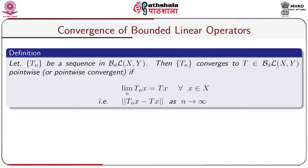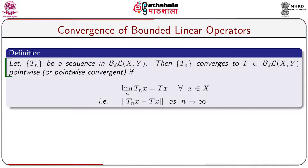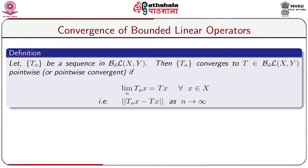We start with BdL(X,Y), where capital X and capital Y are two normed linear spaces over the same field of scalars F, which may be real or complex. Let T_n be a sequence of bounded linear operators from X to Y. Then T_n converges to T in BdL(X,Y) pointwise if the limit of T_n(x) equals T(x) for all x in X, which is equivalent to the norm of T_n(x) minus T(x) tending to 0 as n tends to infinity.